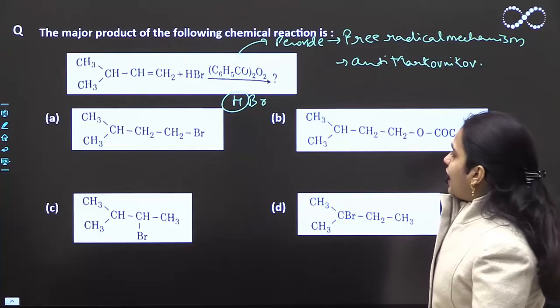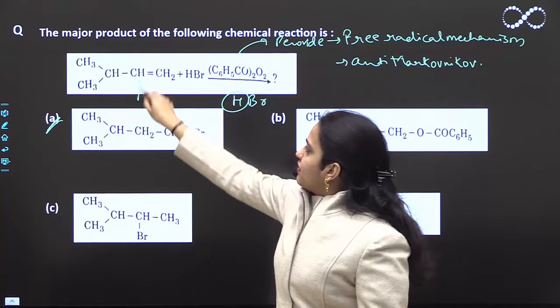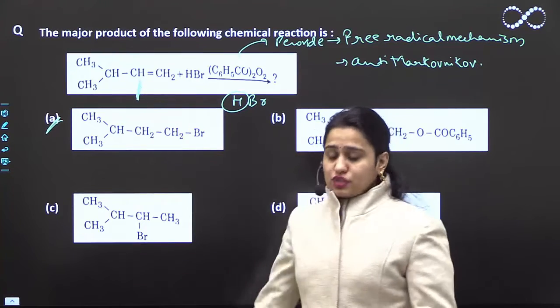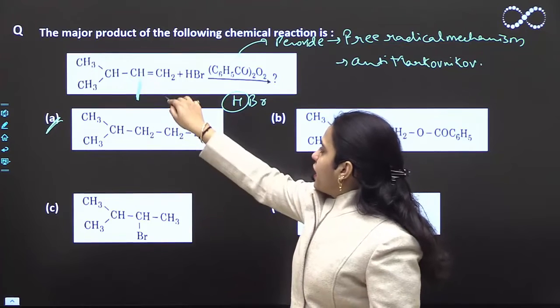Therefore, here, your answer will be A. Hydrogen will go to this carbon which is less hydrogen, and bromine will go to that carbon which is less hydrogen.